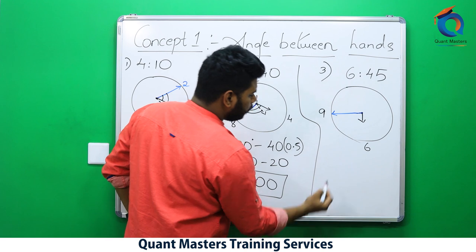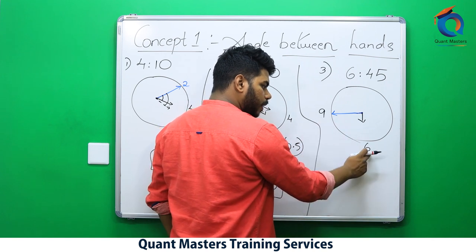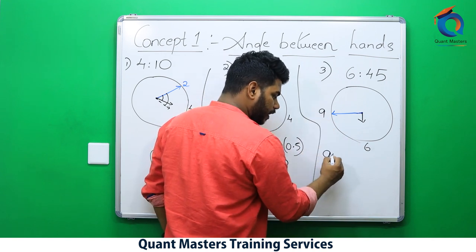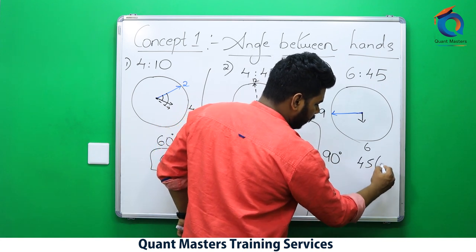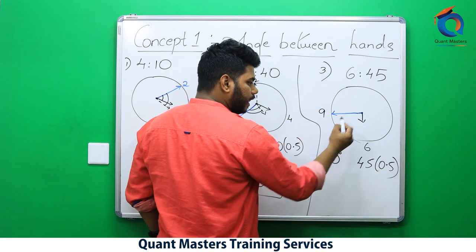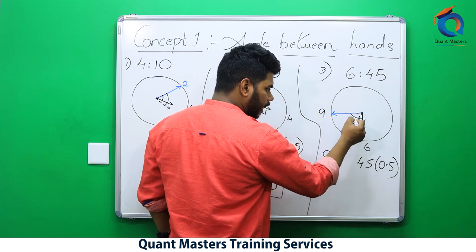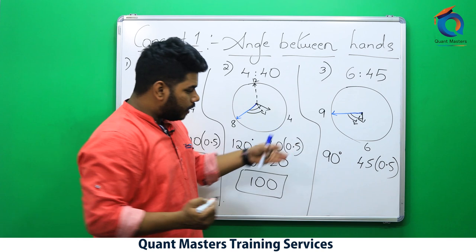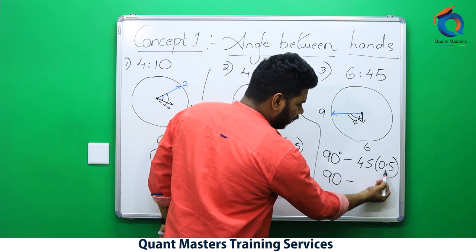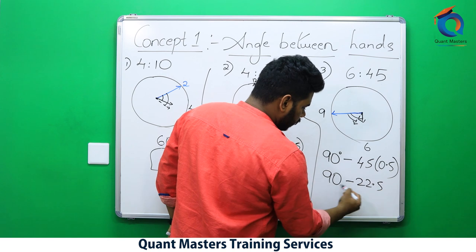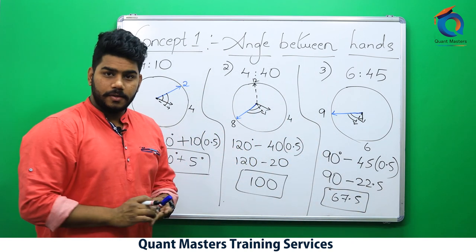Question 3: 6:45. Hour hand is pointing at 6, minute hand is pointing at 9. 9 minus 6 = 3 divisions = 90 degrees. Hour hand has deflected by 45 minutes: 45 × 0.5 = 22.5 degrees. At 6:45 the hour hand deflects towards 7, moving towards the minute hand, so the angle is decreasing — I put a minus. Answer: 90 minus 22.5 = 67.5 degrees.